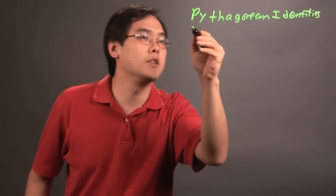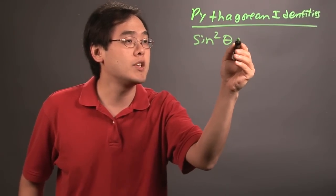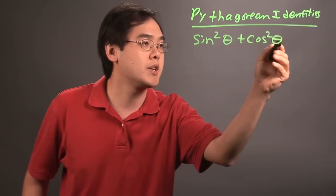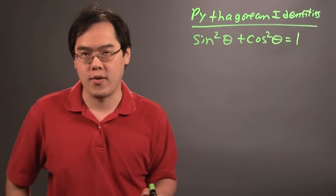Here's a couple of them to consider. One that you'll find you'll use quite a bit is sine squared theta plus cosine squared theta equals 1. That's probably one of the more frequently used Pythagorean identities.